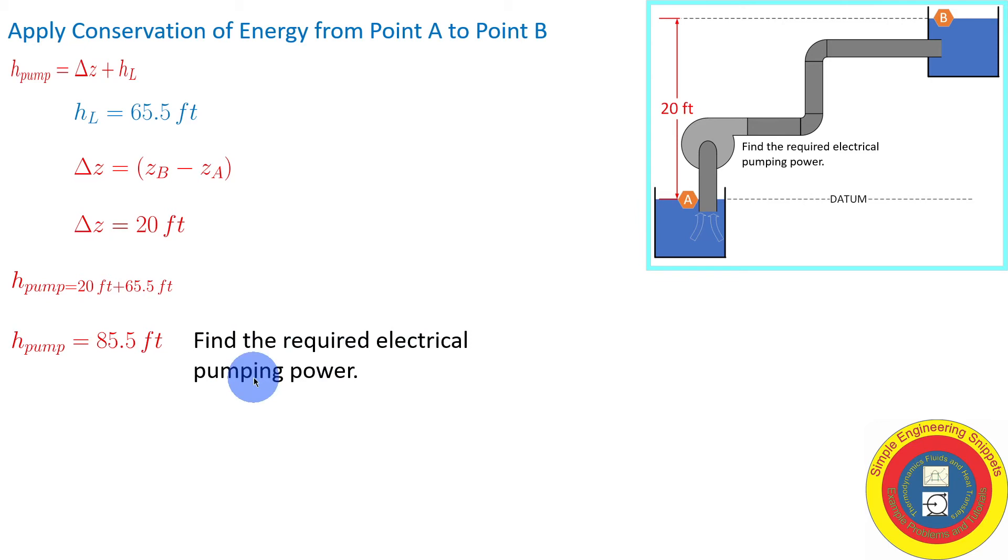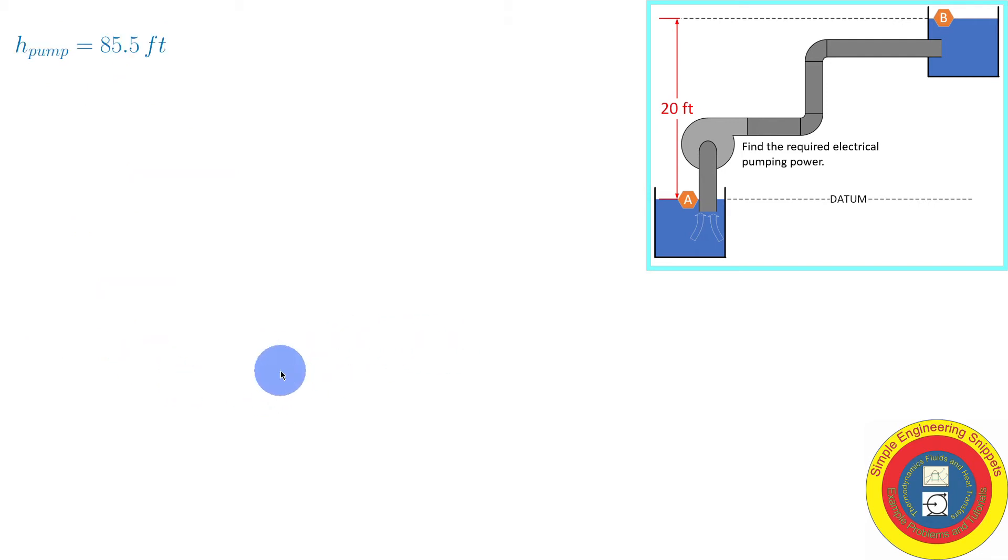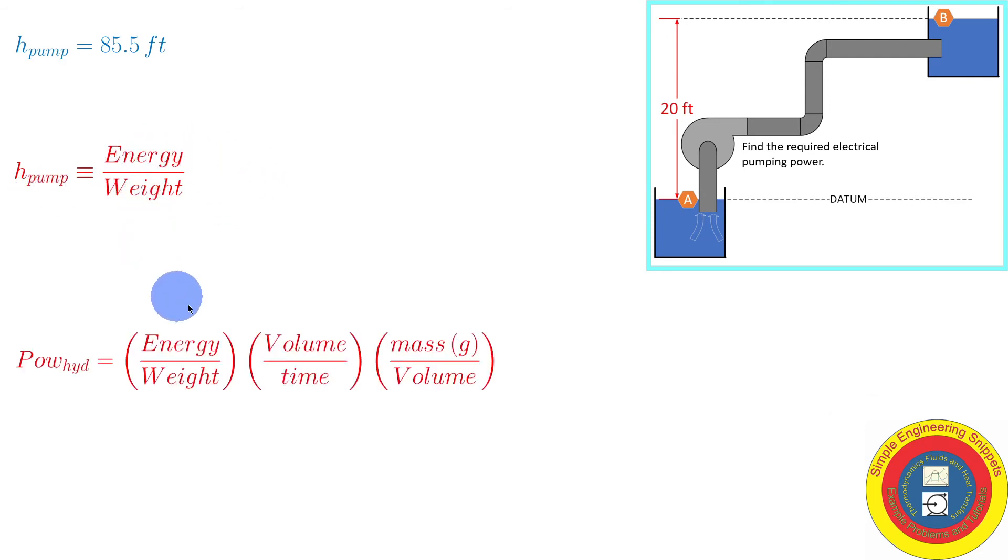However, we are looking for the electrical pumping power. 85.5 feet is the energy per weight that the pump is adding. But we actually want power. So we've got some work to do. How do we do that? Let's review everything. A head is energy per weight.